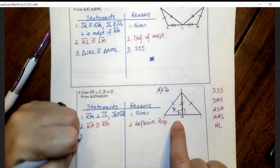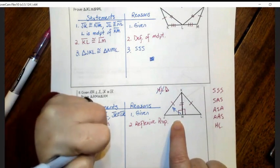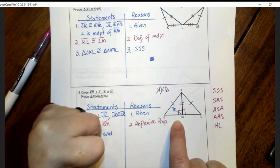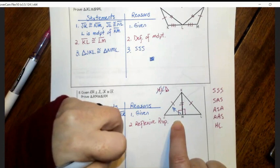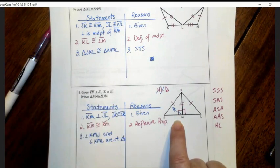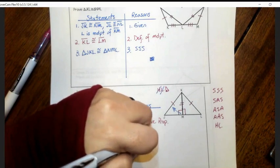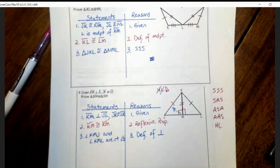So angle KMJ and angle KML are right angles. And that is the definition of perpendicular. Okay, so now I know that there's a right angle in each of the triangles.